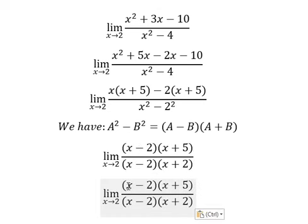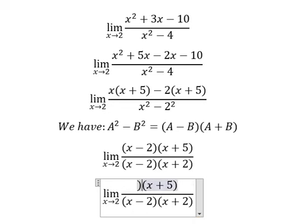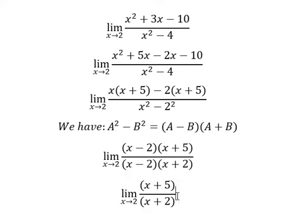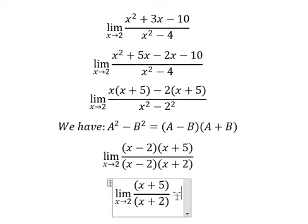Now we simplify by canceling (x - 2) from the numerator and denominator. Then we substitute x equals 2 into the simplified expression (x + 5) over (x + 2).